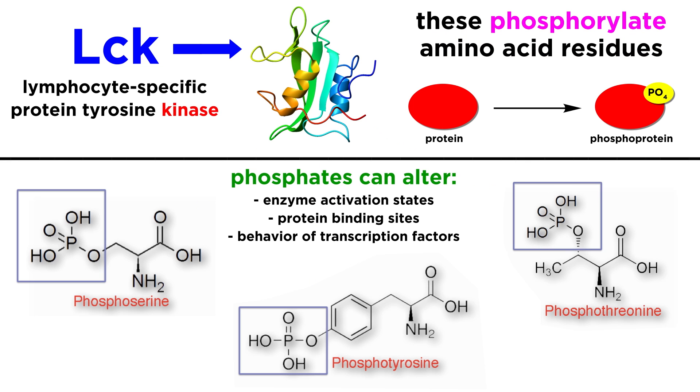Phosphate groups can change how a protein interacts with other proteins, such as by changing enzyme activation states, altering protein binding sites, or changing how transcription factors behave.